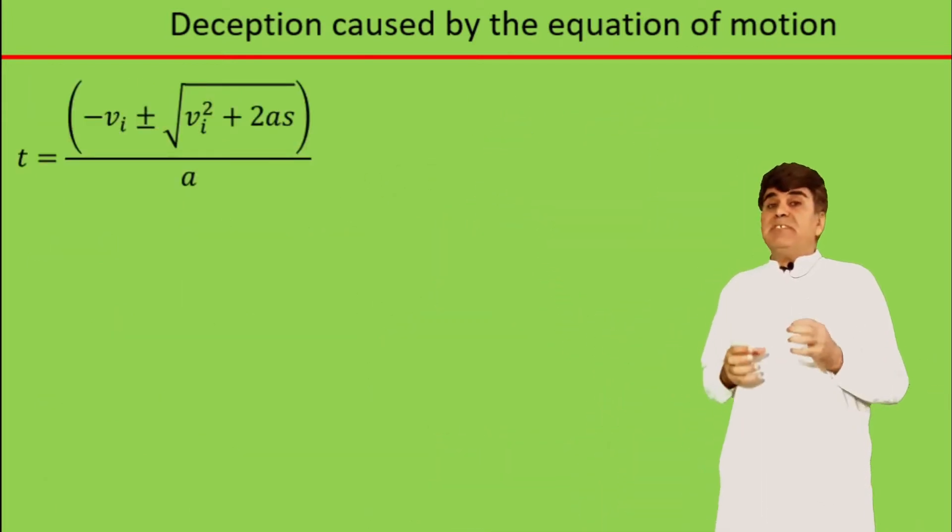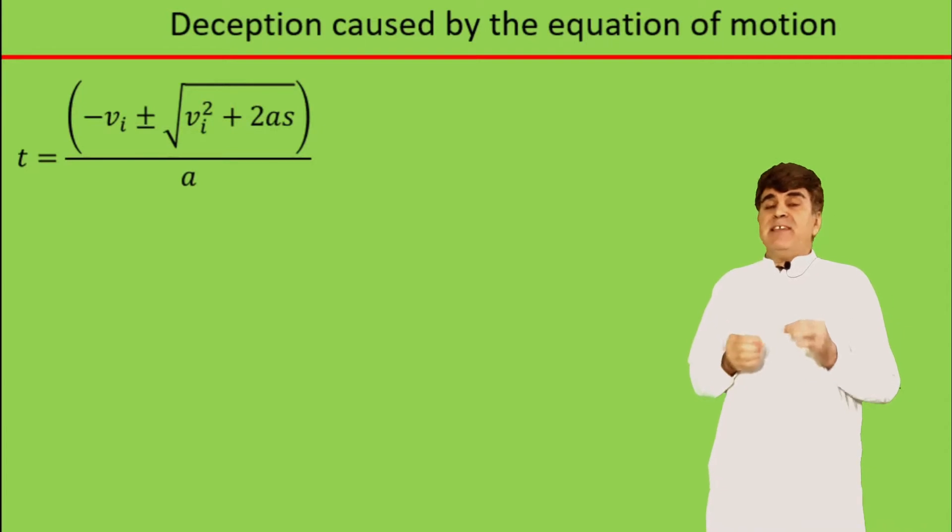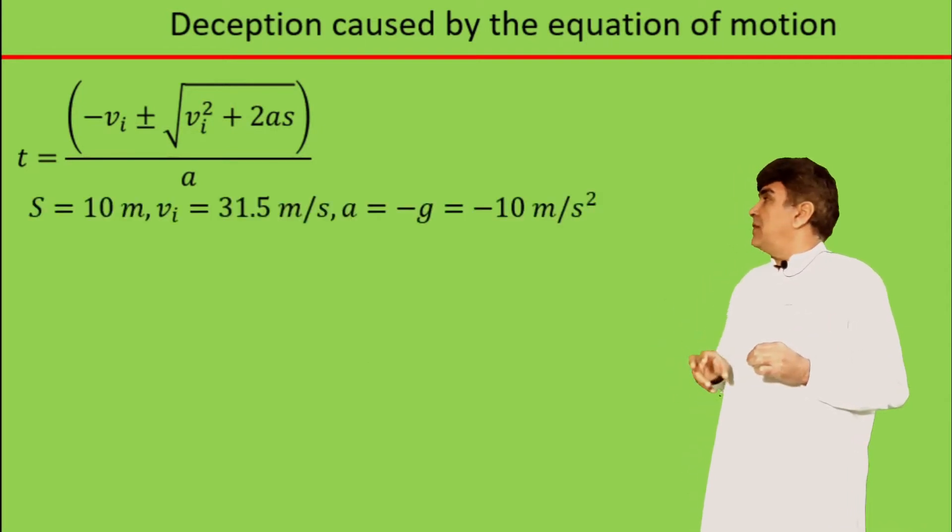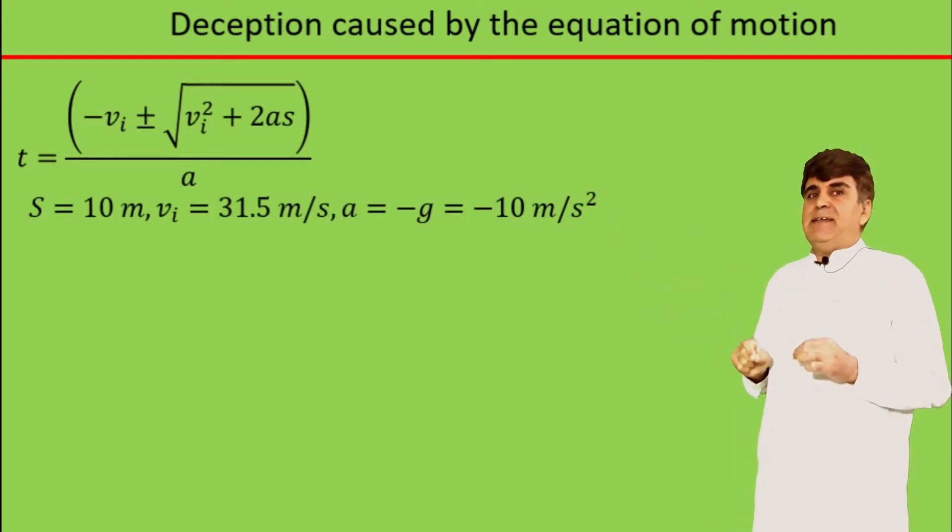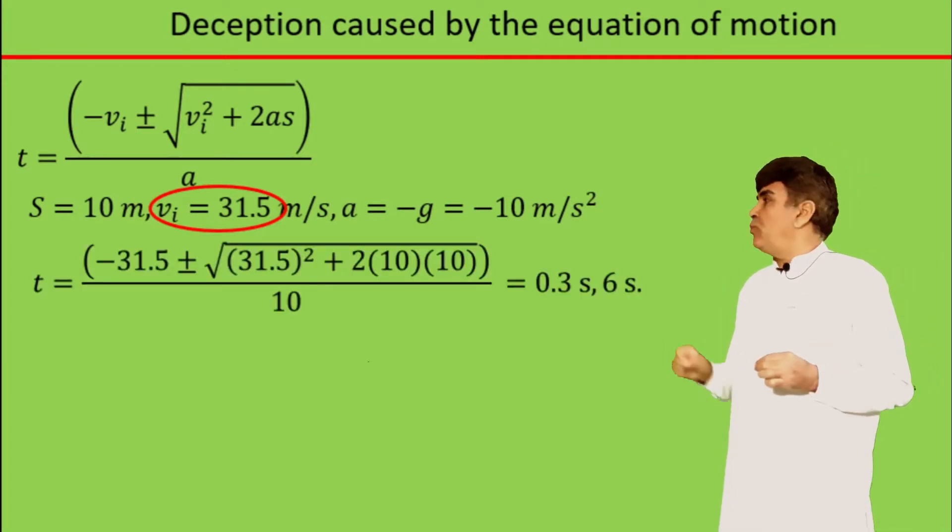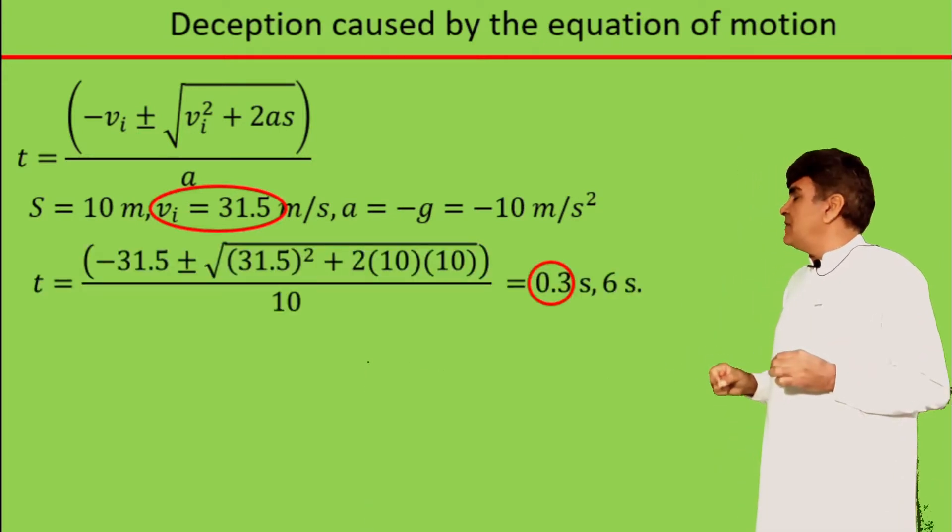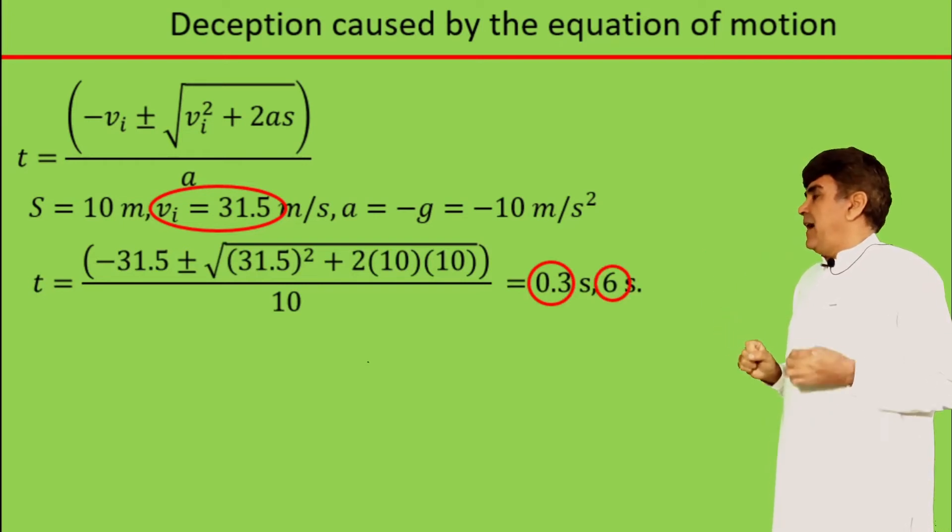So let me substitute this set of data into the equation for time. If I replace these values, I see the time for the initial velocity 31.5 meters per second is 0.3 seconds and 6 seconds.